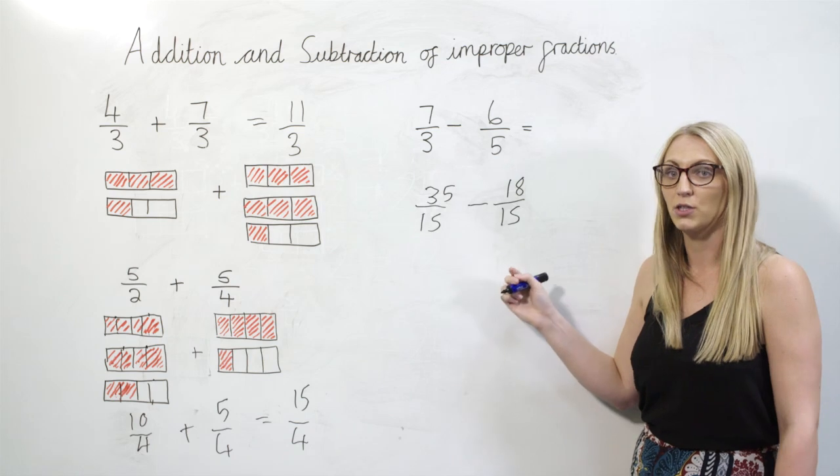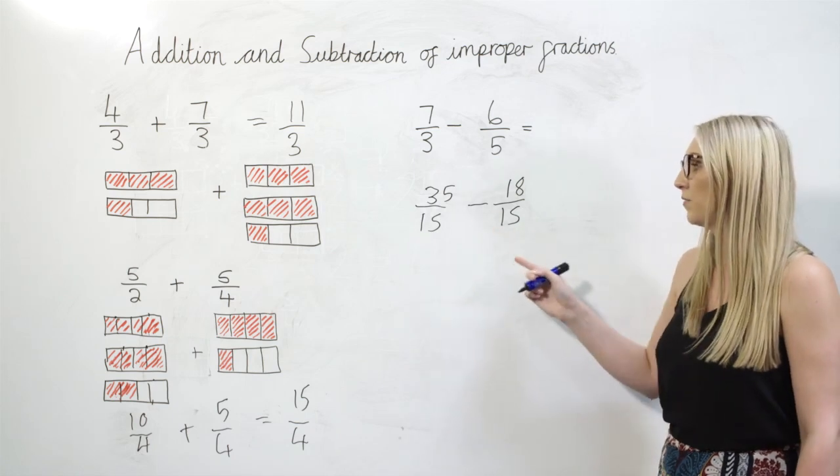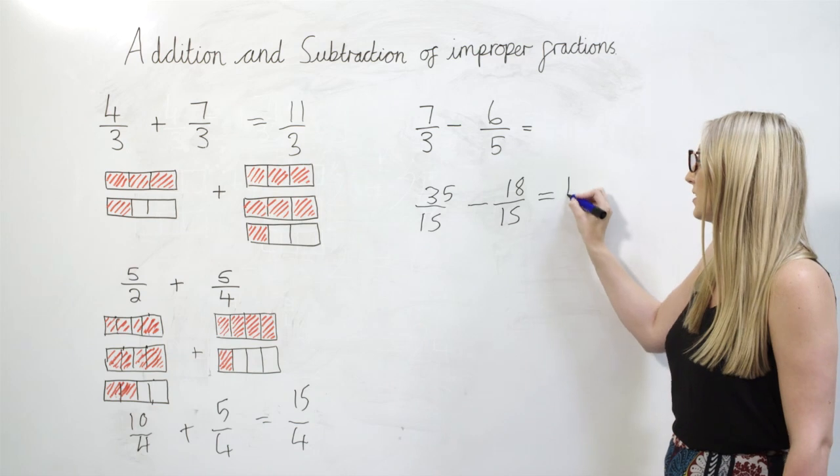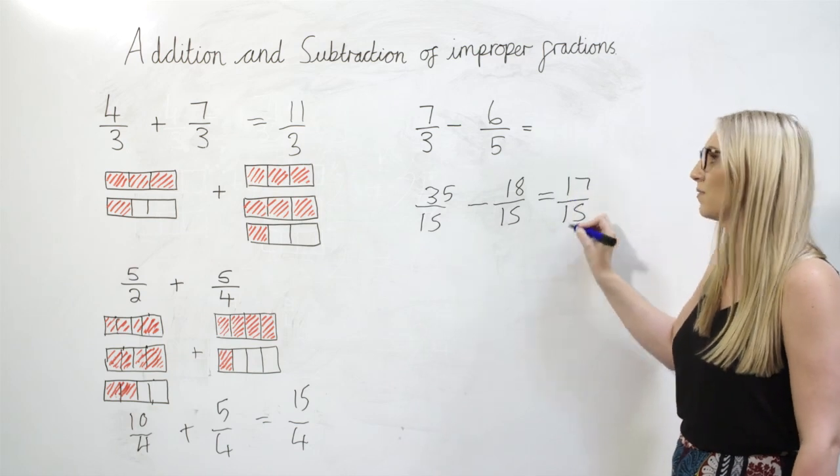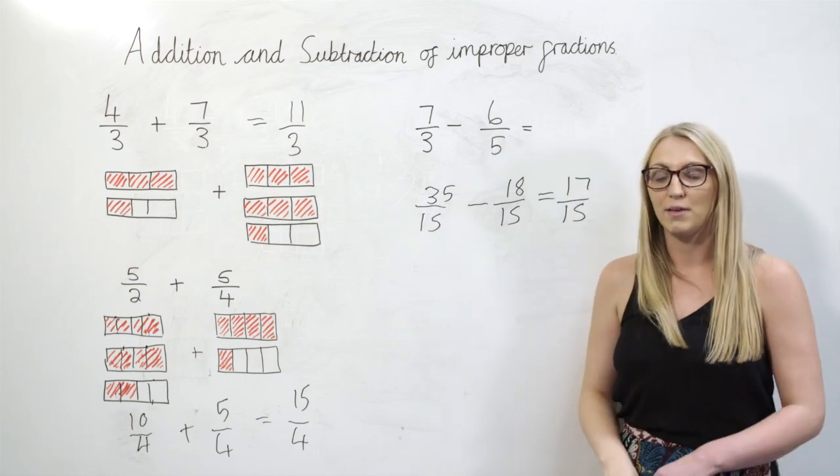Now that the denominator is the same I can subtract them. So 35-fifteenths take away 18-fifteenths equals 17-fifteenths and that's how you add and subtract improper fractions.